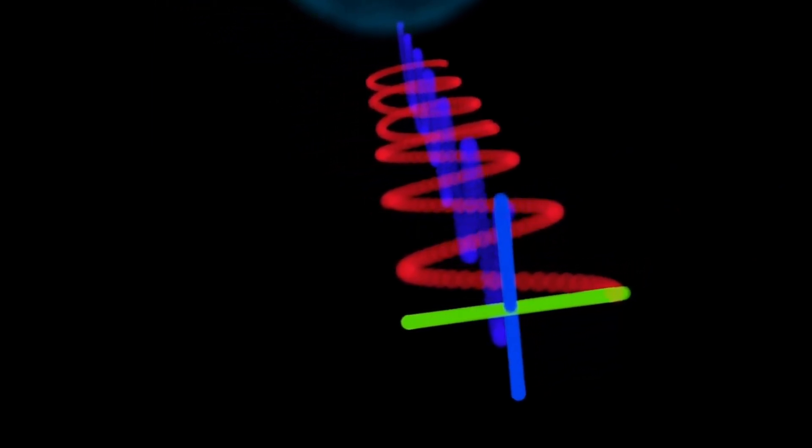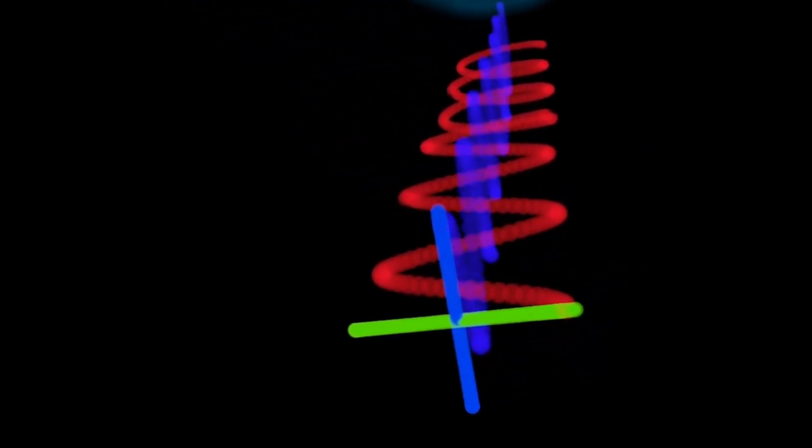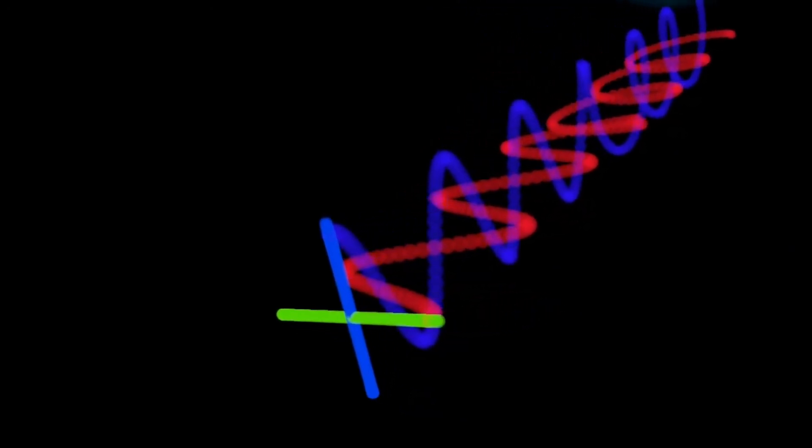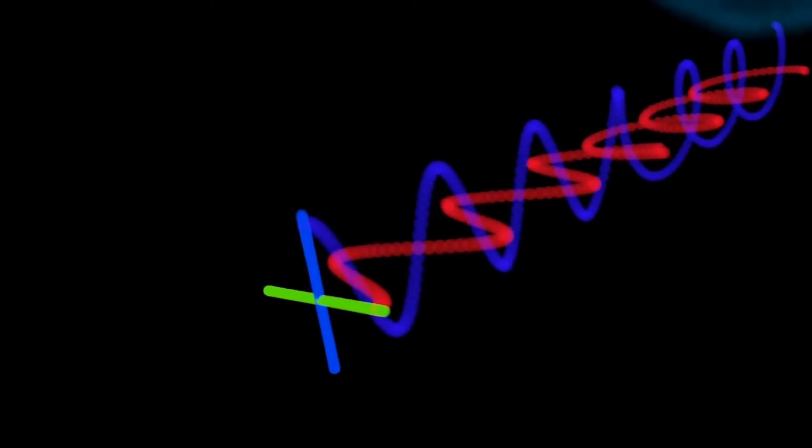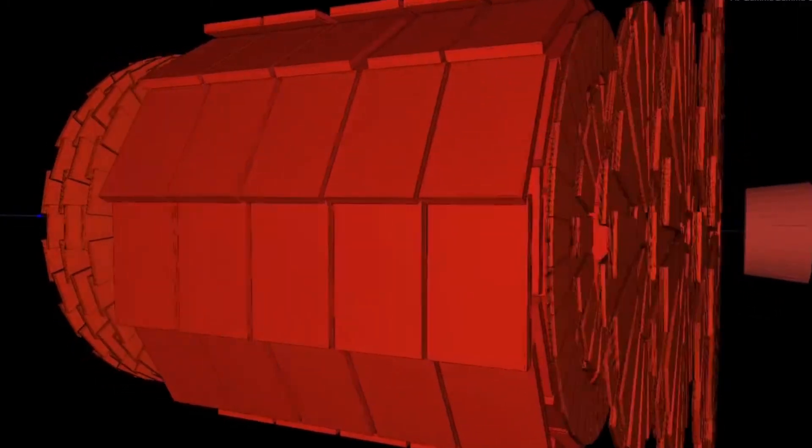Photons are the carrier particles for all forms of electromagnetic radiation, not just light. These include x-rays, gamma rays, ultraviolet light, infrared light, visible light, microwaves, and radio waves.